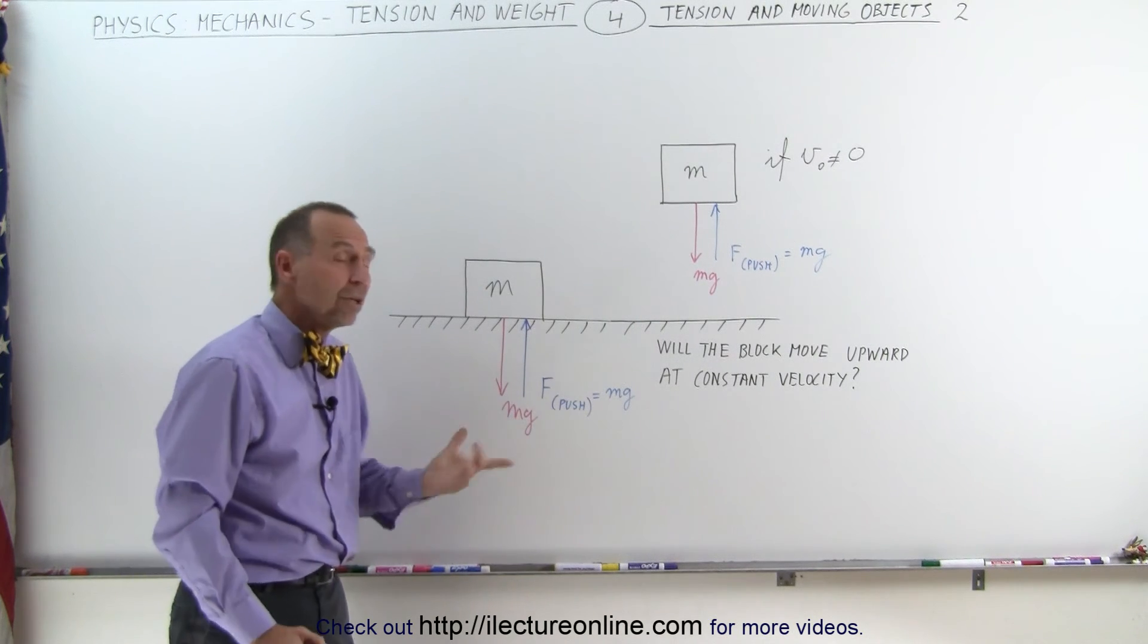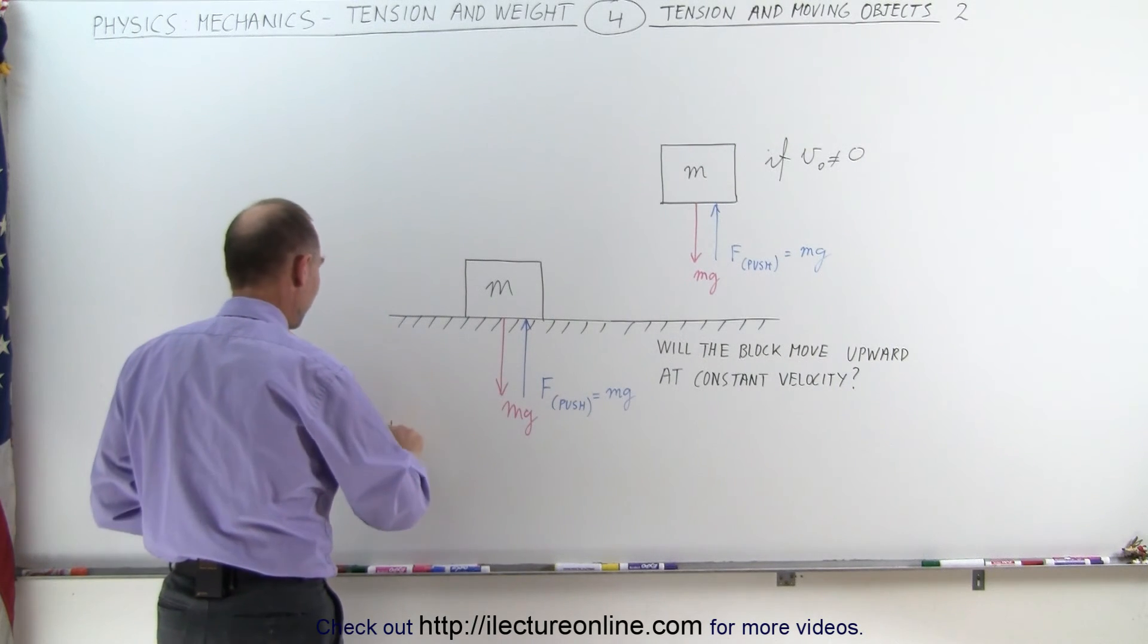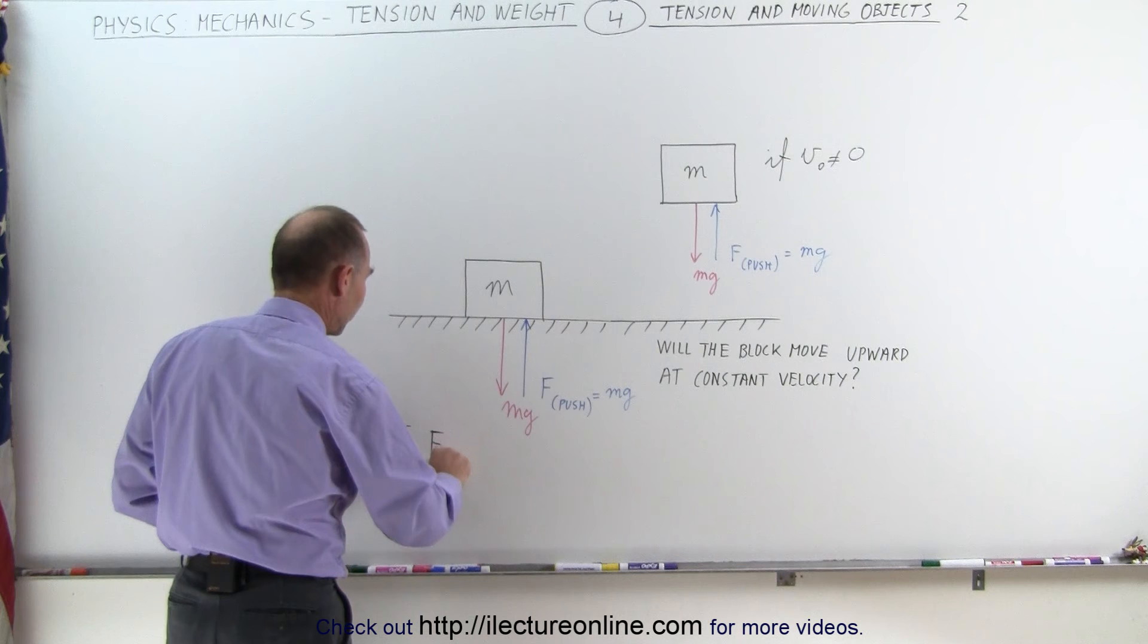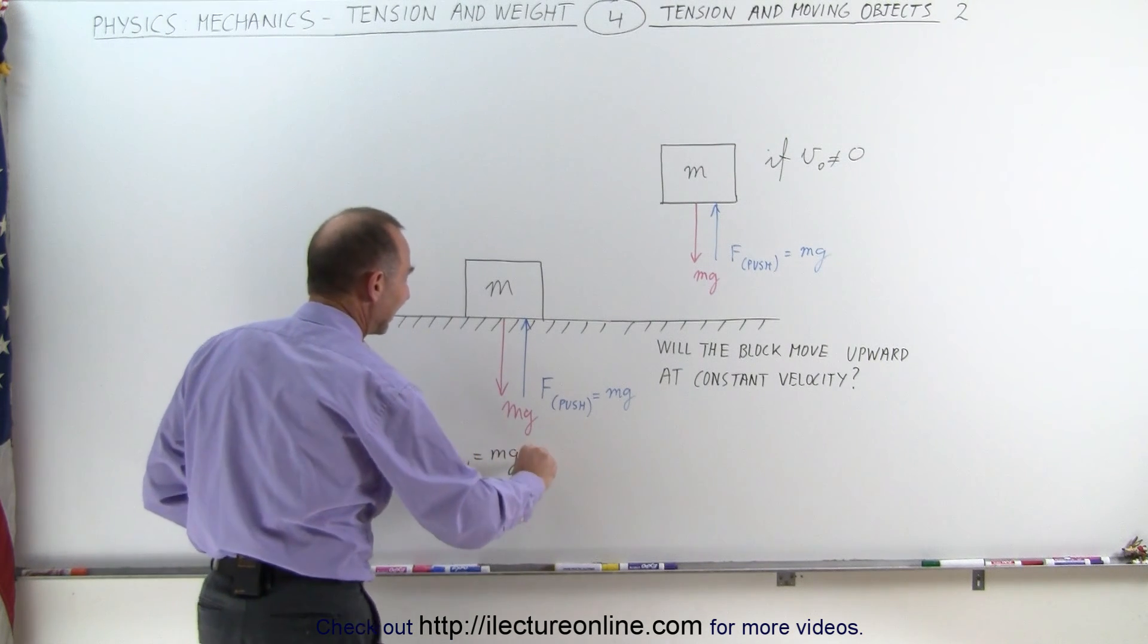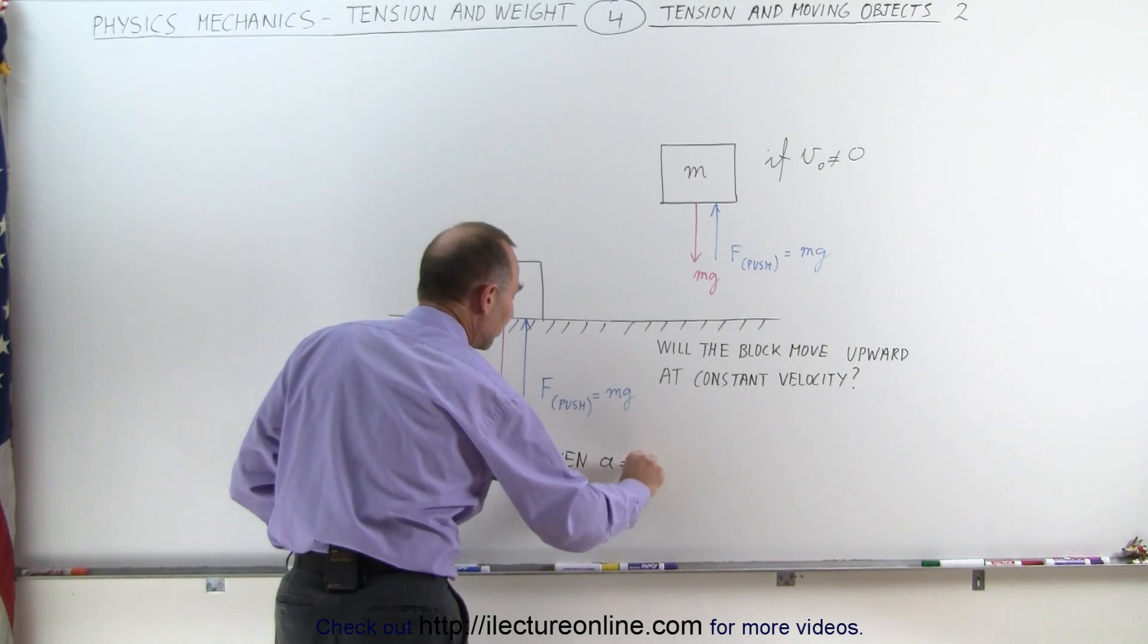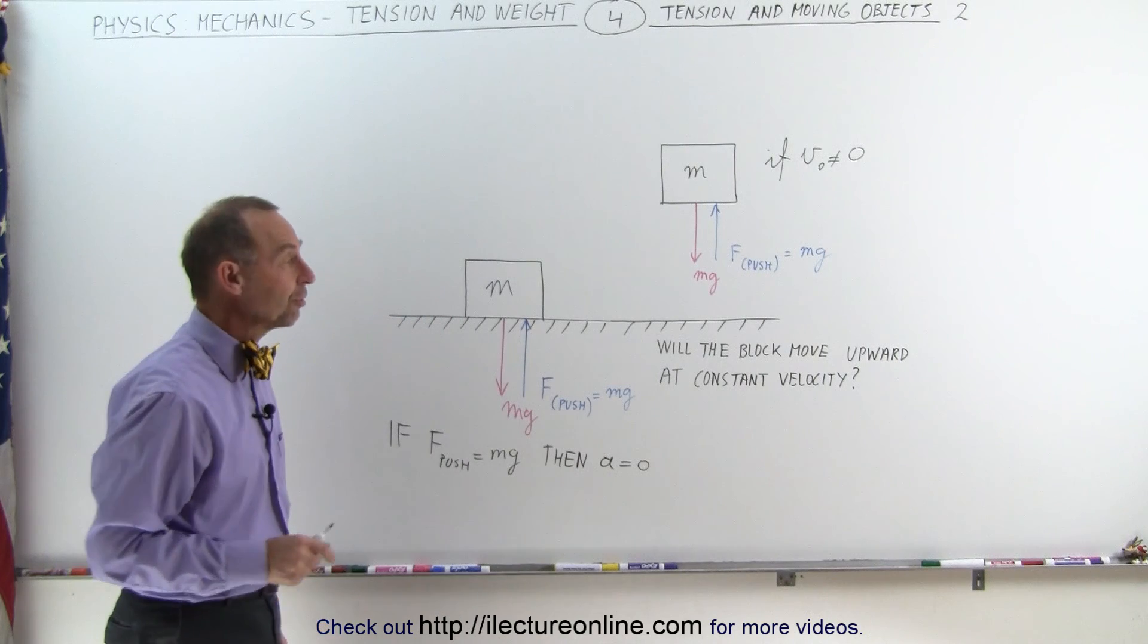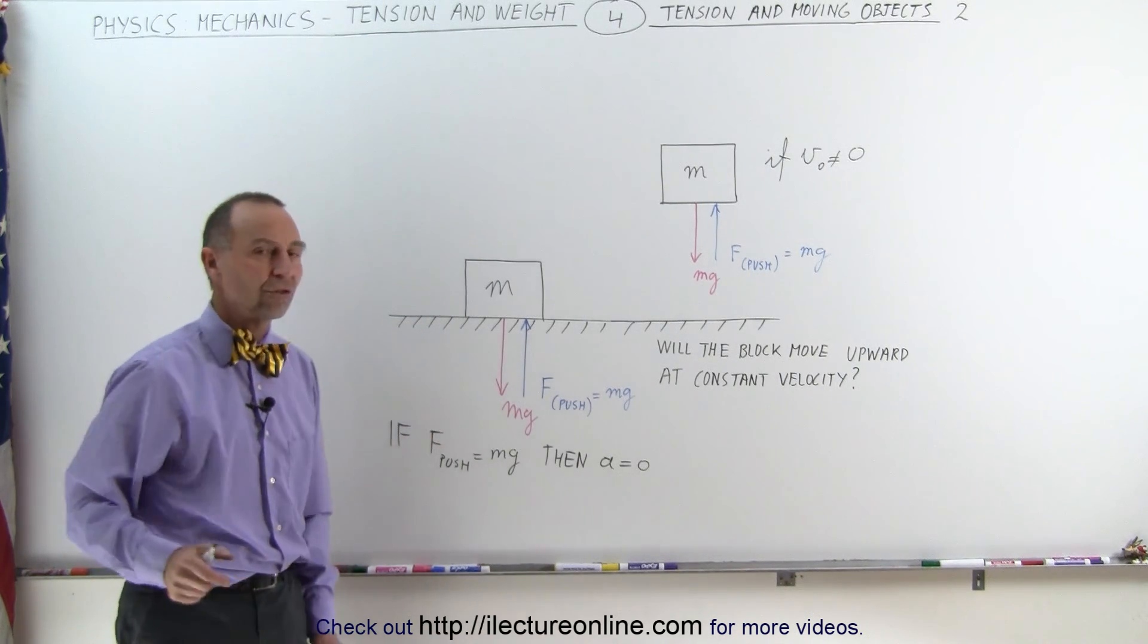If they're equal to one another, all that means is that the acceleration is equal to zero. In other words, if the force of the push in magnitude is equal to the weight of the object, then all we can say is that the acceleration is equal to zero, but if it already has an initial velocity, that velocity will simply continue if those two forces are equal.